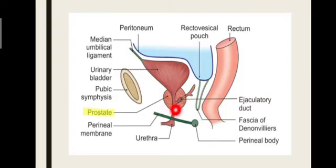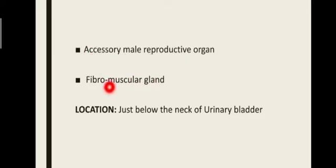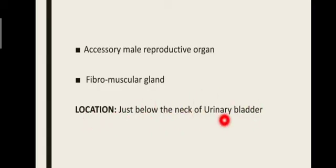The prostate gland is your accessory male reproductive organ and it is a fibromuscular gland. It is located just below the neck of the urinary bladder.